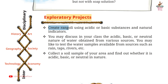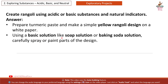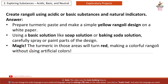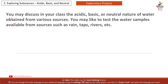Exploratory Project Question 1: Create rangoli using acidic or basic substances and natural indicators. Answer: Prepare turmeric paste and make a simple yellow rangoli design on white paper. Using a basic solution like soap solution or baking soda solution, carefully spray or paint parts of the design — the turmeric in those areas will turn red, making a colourful rangoli without using artificial colours.